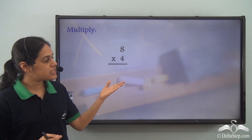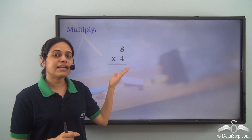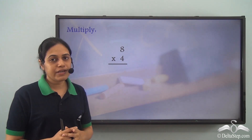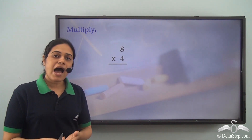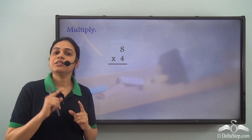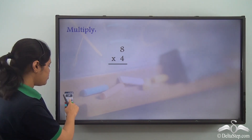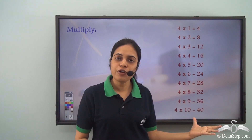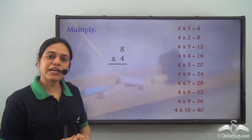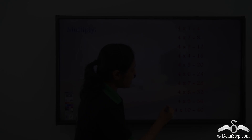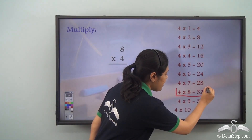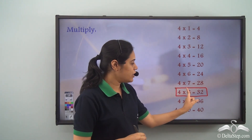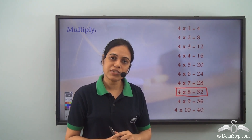So now let us come to our question: what is 8 into 4, or 4 times 8? For solving this, I need to remember the table of 4. This is the table of 4. Now I need 8 into 4, which is the same as 4 into 8. So I have 4 into 8, and 4 into 8 is 32.